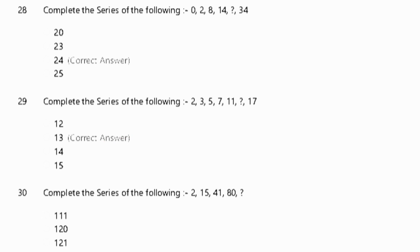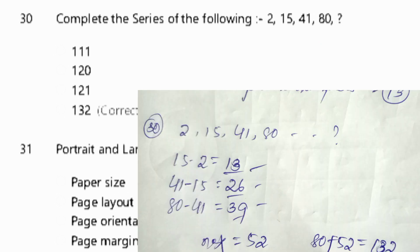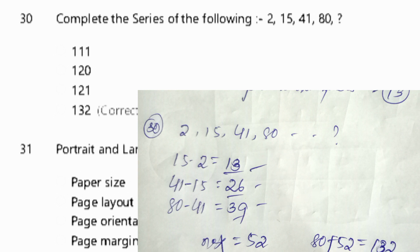Next, number 30: complete the series of the following. The series given is 1, 2, 1, 1, 1, 1, 2, 1, 1.